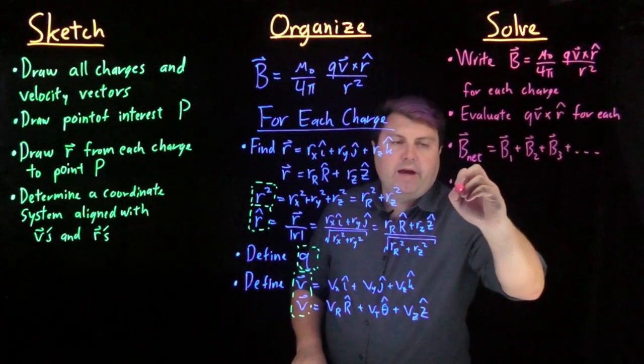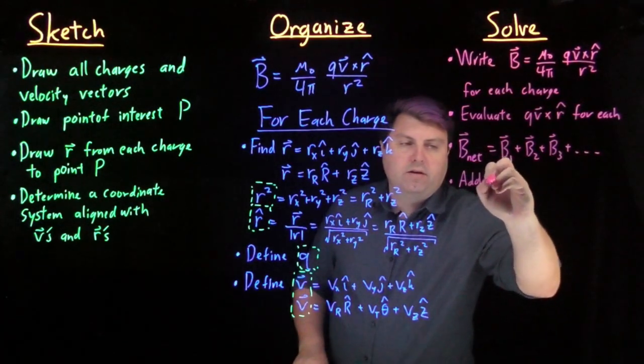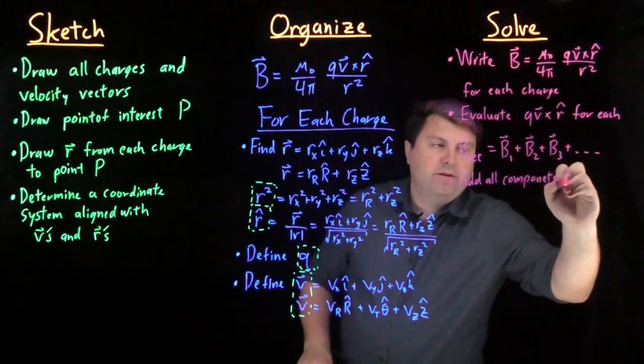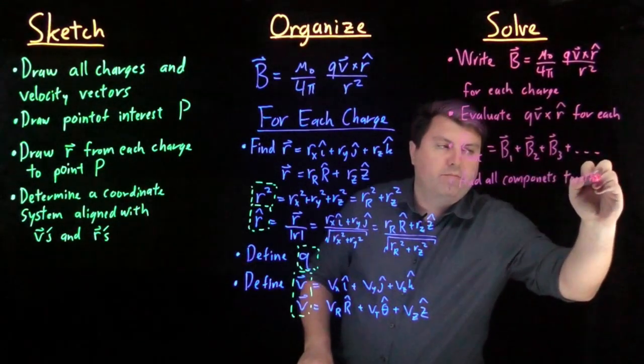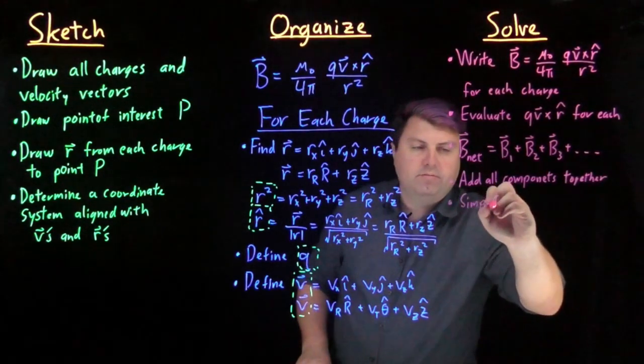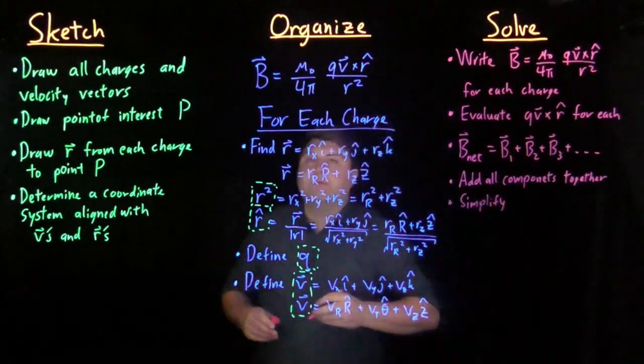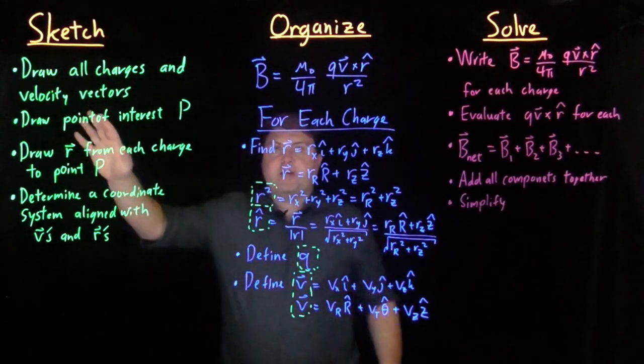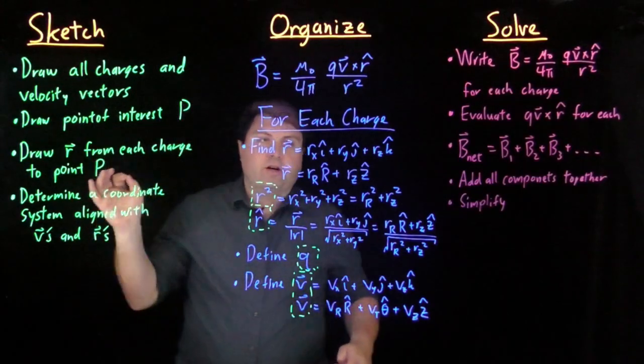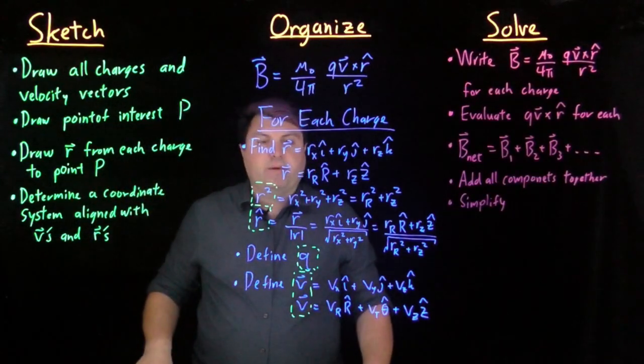So we want to add all components together because we want it in component form with simplifications. So this is how we use sketch-organize-solve to solve for discrete charges moving and creating magnetic fields.